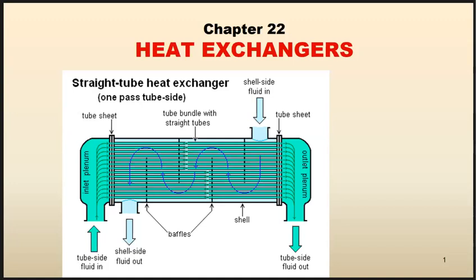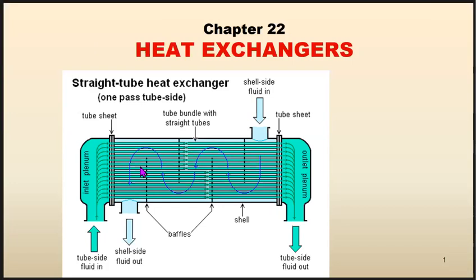Heat exchangers are widely used in space heating, air conditioning systems, refrigeration systems, power stations, chemical plants, petrochemical plants, petroleum refineries, natural gas processing, and sewage treatment. The classic example of a heat exchanger is found in an internal combustion engine, in which a circulating fluid known as engine coolant flows through radiator coils and air flows past the coils, which cools the coolant and heats the incoming air — so we can release heat from the engine components. One of the best-known heat exchangers is the radiator of a car.